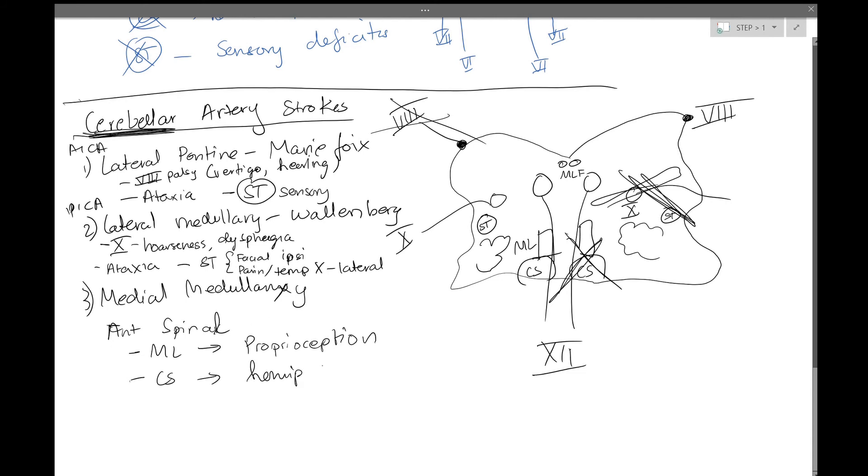Also, your corticospinal is knocked out, therefore you have hemiparesis. And then lastly, cranial nerve 12 is knocked out, therefore you'll have ipsilateral tongue paralysis.